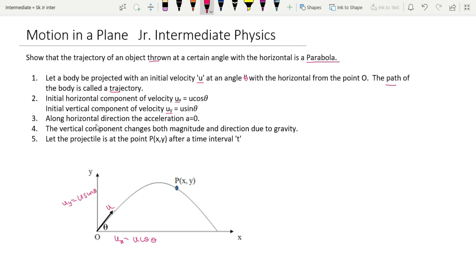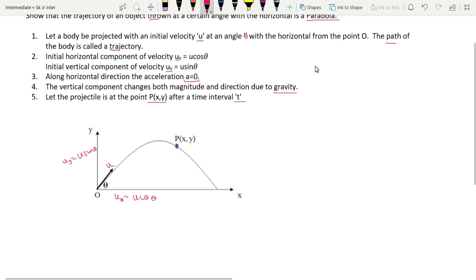Along the horizontal direction, the acceleration is zero. The vertical component changes its magnitude and direction due to gravity, which acts in the vertical direction. Let the projectile be at point P(x, y) after time interval t. After being projected, the object follows a curved path, and we need to find that this path is a parabola.